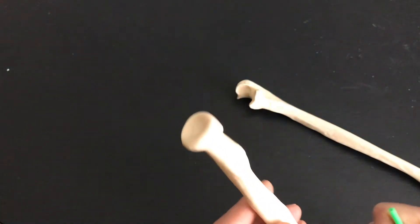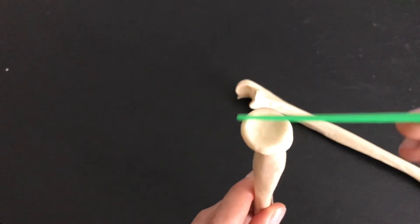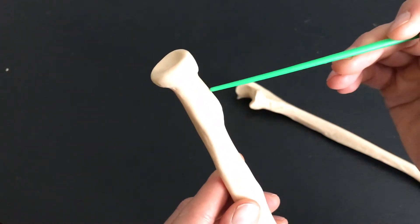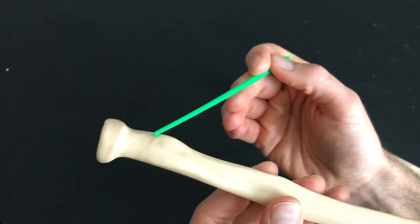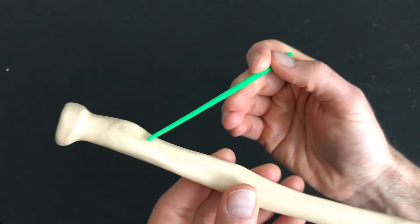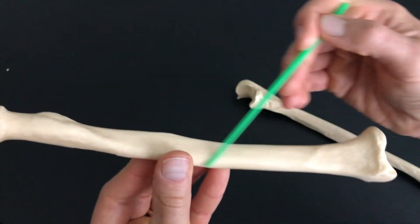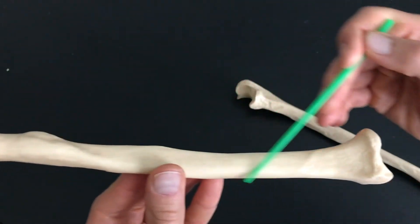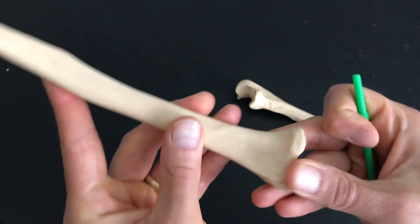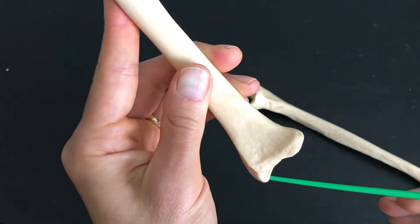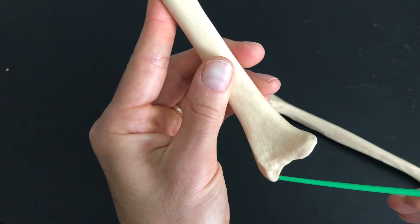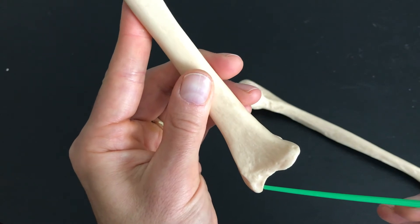So, again, one at a time. We have the radial head of the radius, we have the radial tuberosity—that's this bump that comes out like this. We have the diaphysis, or the shaft, of the radius, and we come all the way down to the bottom where you'll see something called the styloid process. This is the styloid process of the radius.